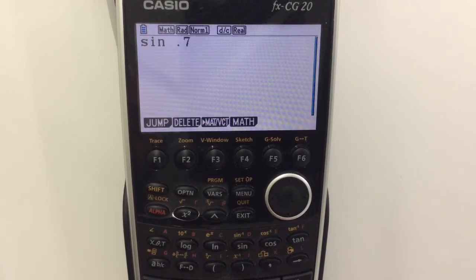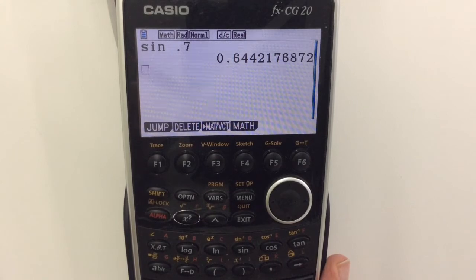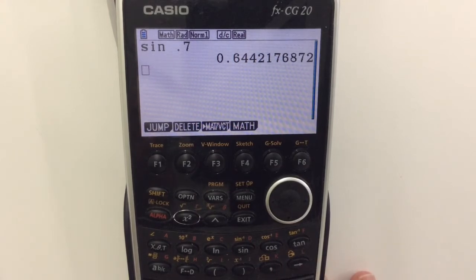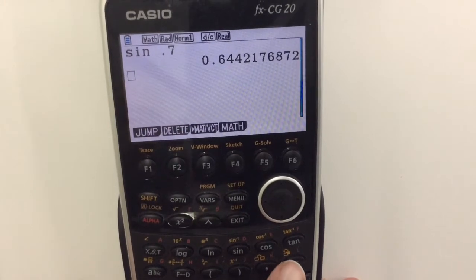sin of 0.7. Okay, we've got that value. Maybe we need to use that in another calculation. What we can do is simply press this button right here, this little arrow. See right at the bottom, press that arrow and...